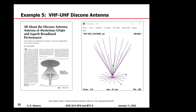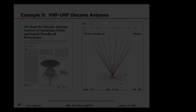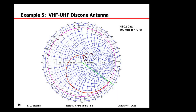Here's a disc cone antenna from an article I wrote about 15 years ago in QEX magazine. The disc cone behaves much like a monopole over a small ground screen. This particular antenna has one resonance and no anti-resonances, at least not in the frequency band plotted — from 100 MHz to 1 GHz.